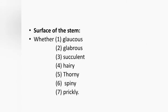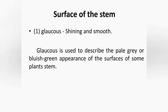Now we see about the surface of the stem. Based on surface of the stem, it is identified as glaucous, glabrous, succulent, hairy, thorny, spiny and prickly. Glaucous means shining and smooth; it is used to describe the pale grey or bluish-green appearance of the surface of some plant stems. The absence of the ordinary bright green colour of the stem is called glaucous.